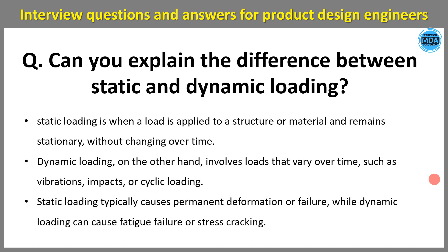Can you explain the difference between static and dynamic load? Static generally refers to a stationary object or machine, while dynamic refers to objects in motion. Static loading is when the load is applied to a structure or material and remains stationary without changing over time. Dynamic loading involves loads that vary over time, such as vibration, impact, and cyclic loading. Static loading typically causes permanent deformation or failure, while dynamic loading can cause fatigue failure or stress cracking.